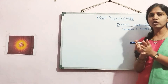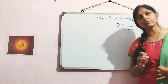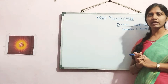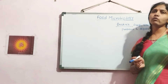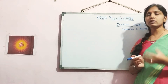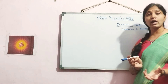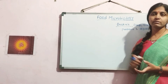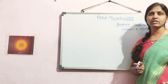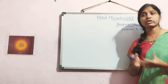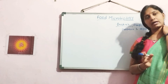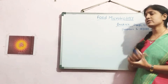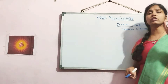Bacteria are considered the main group of microorganisms present within food samples because they are a diverse group that can grow under different environmental conditions of pH and temperature. There are psychrophilic microorganisms which grow at lower temperatures, thermophilic microorganisms which grow at higher temperatures, acidophiles which grow at acidic pH, and basophiles which grow at alkaline pH. Due to this diversity, bacteria are majorly present as contaminants or components within food samples.